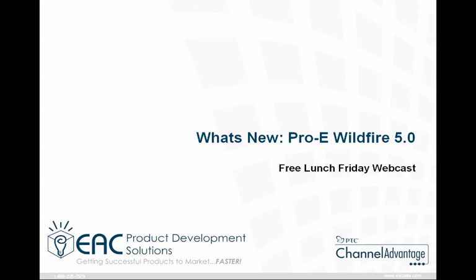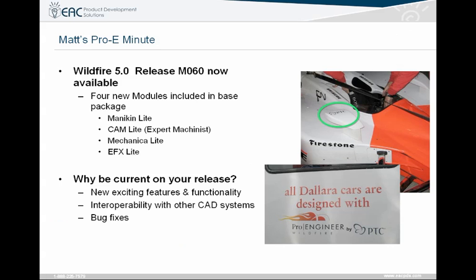What's new in ProEngineer Wildfire 5? Wildfire 5 release M060 is now available. A lot of people often ask, do I really need to get all the releases or get all the maintenance builds? Maybe not all of them, but it's good to understand that there's new functionality being added with these — added functionality that you could be using and taking advantage of, and if you don't update your seat of ProEngineer, you're not going to see that.